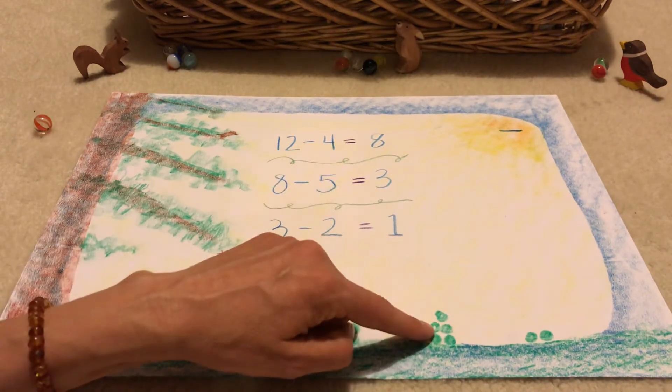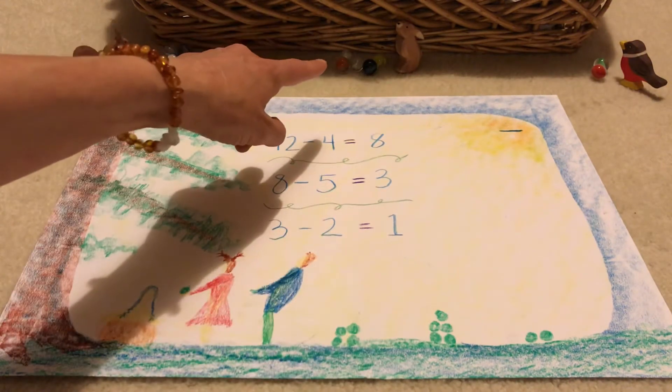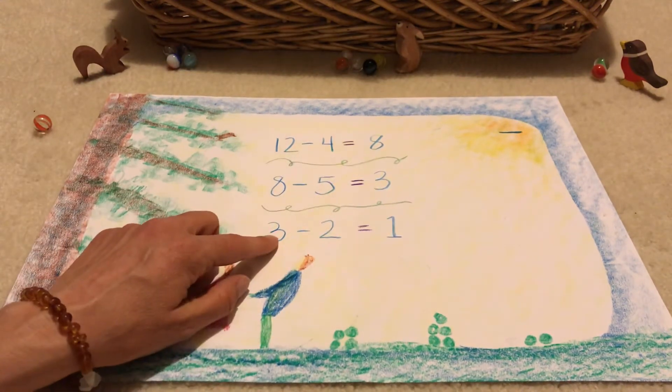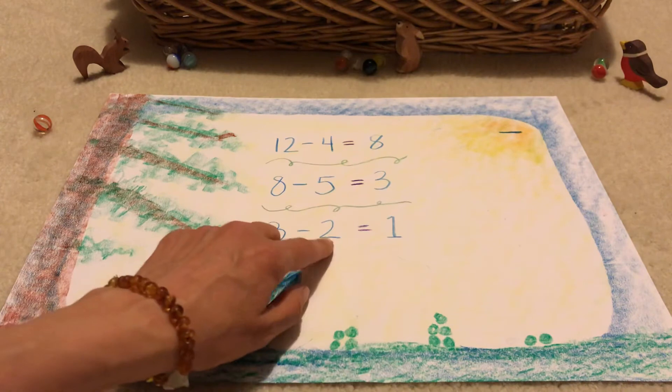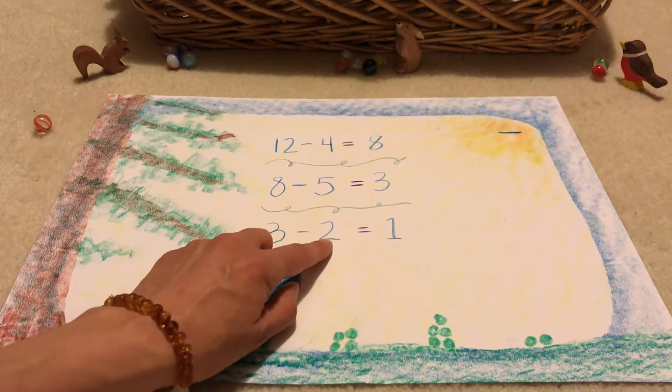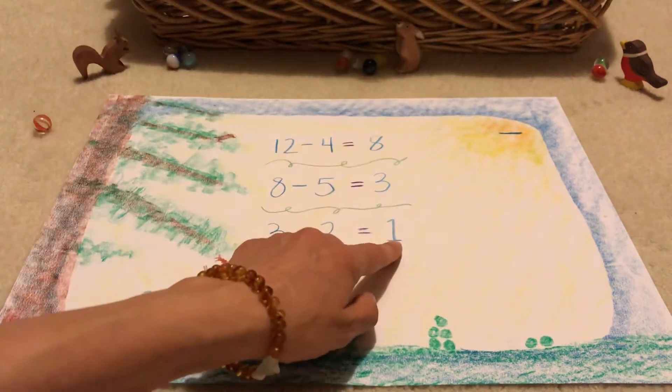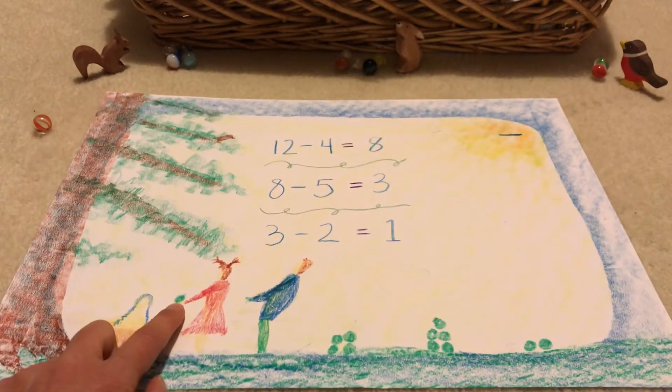So three are left over, and we take two away. Three minus two here for the bird family, and that's one left over for Grandmother Earth.